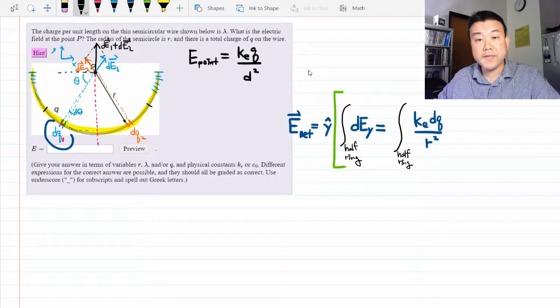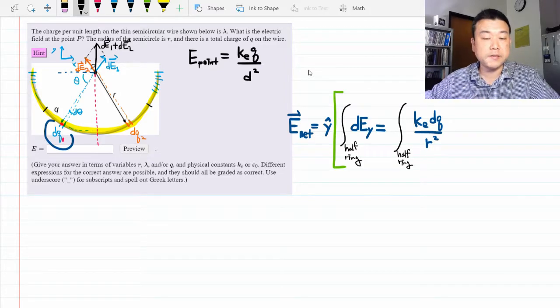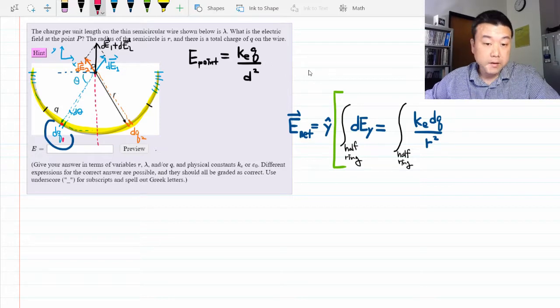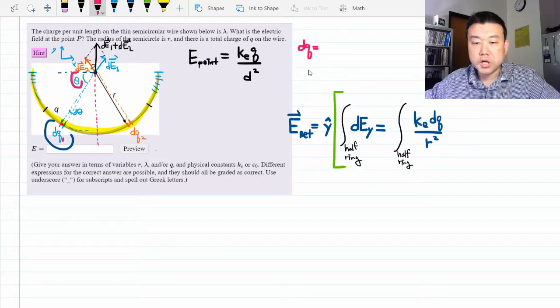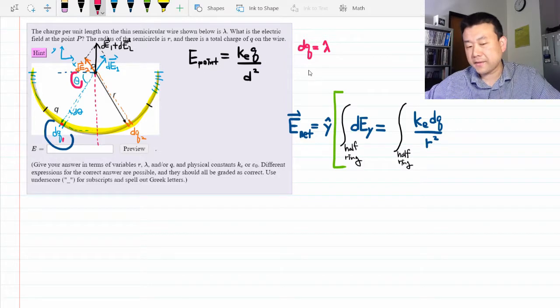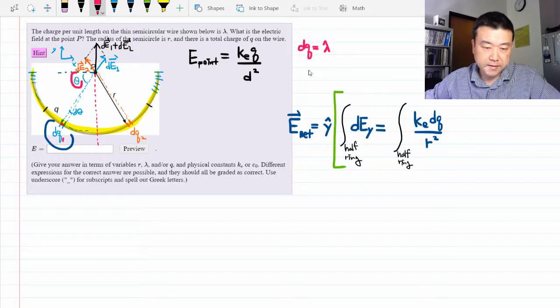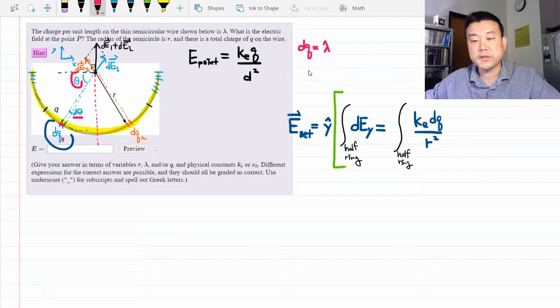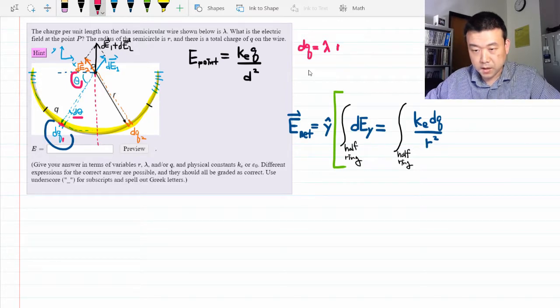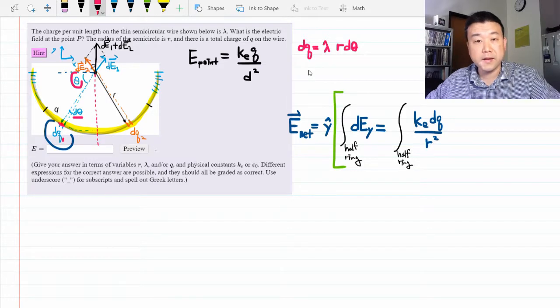We need a way to write out dq, express it in terms of something we can parameterize. The theta here is a good parameter, so we'll use that. So dq has to be the charge density, lambda, times some length element. Here, theta is not the length, it's a small angle. So the arc length that corresponds to d theta should be r times d theta, provided that we are specifying theta in radians.